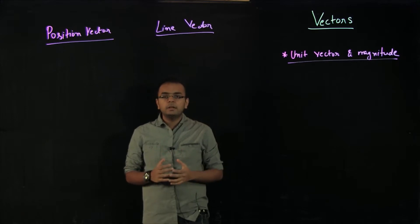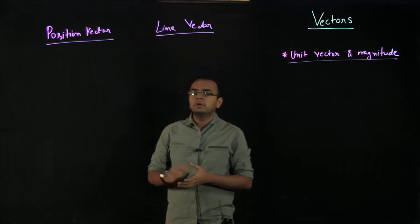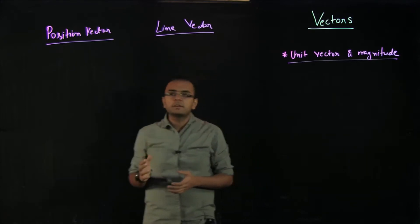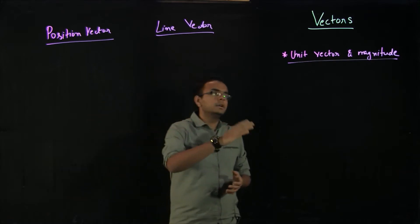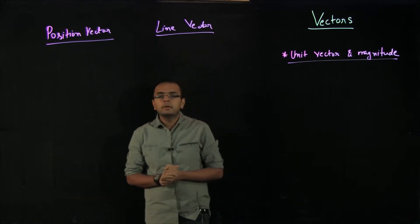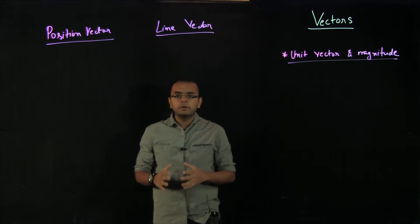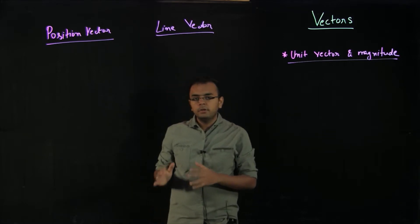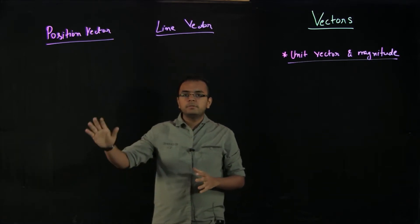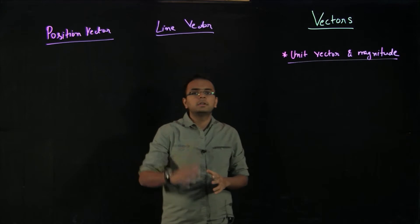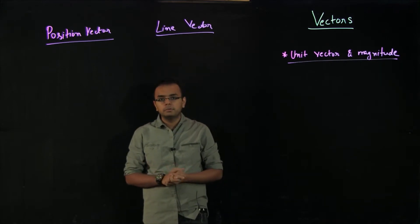I believe there is a lot of confusion among students about even basic things like the definition of vectors — position vector, line vector, unit vector and magnitude. If you can really focus on this video and try to understand the difference between position vector and line vector, that will clarify a lot of things for you.